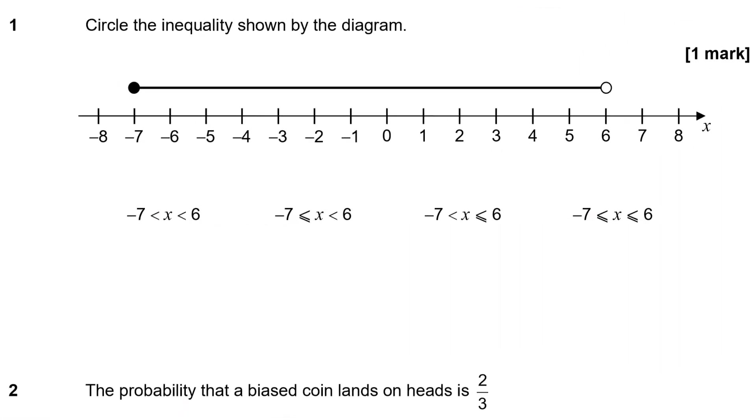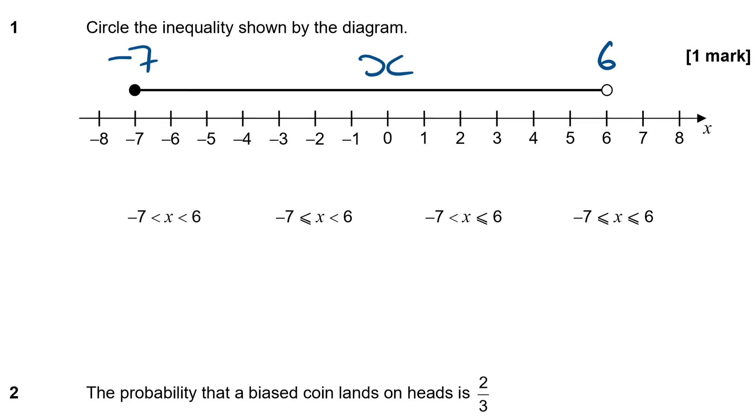Question 1 asks us to circle the inequalities shown in this diagram. So we've got this line that stretches from minus 7 up to 6. Now the value of x is going to lie somewhere in between these. Now we just need to work out which way round the signs go. Now underneath the minus 7 we have a filled dot. And the filled dot means that the number minus 7 is included in the range.